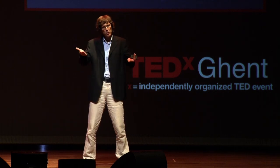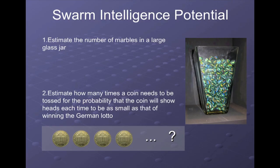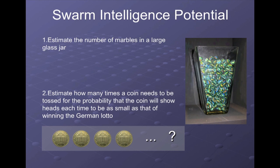In a German museum in the center of Berlin, we showed visitors two questions they could type into a computer. The first was to estimate the number of marbles in a jar. The second was a combinatorics question: how often do you need to toss a coin so that the probability of always getting heads becomes as small as winning the German lotto — roughly one in 14 million?